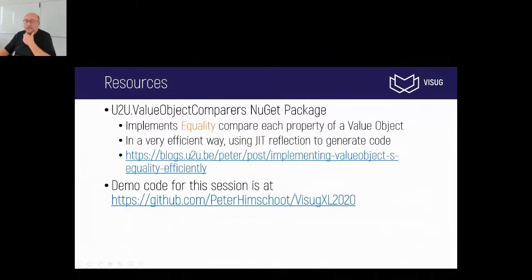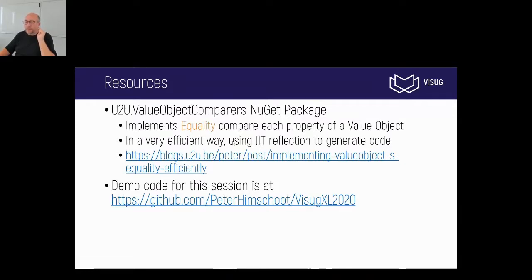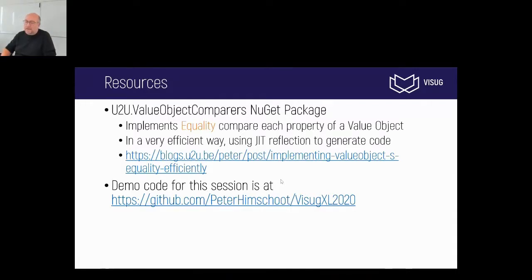I've built a NuGet package called U2U Value Object Comparers that gives you the ability to implement equality and also get hash code very efficiently. They both use the same technique: reflection once to generate the proper code, and from then on you call that code with near hard-coded performance. If you want to have a look at my demo code, I've checked everything into GitHub at github.com/PeterHimschold/VizuqExcel2020, where you can download it with all branches and replay this if you'd like.